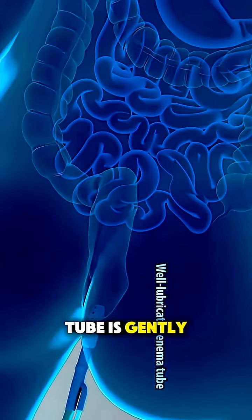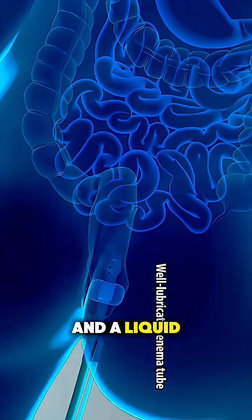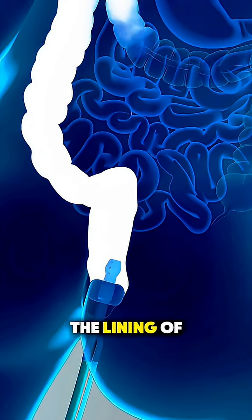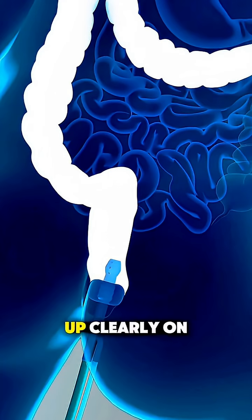A small, soft tube is gently inserted into the rectum, and a liquid called barium sulfate is slowly introduced through the tube. This barium coats the lining of the colon, making it show up clearly on x-ray images.